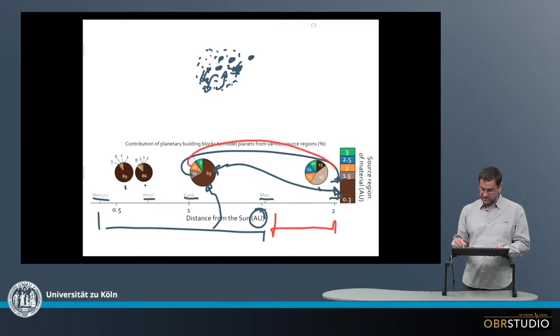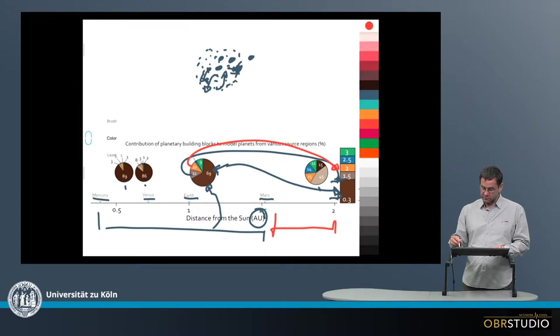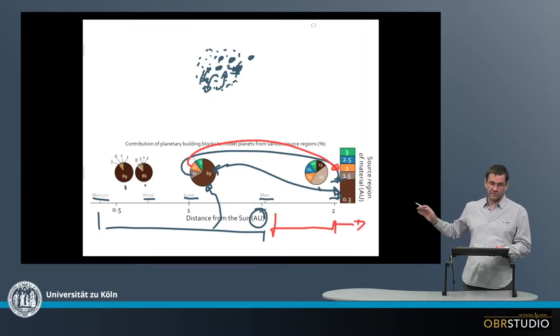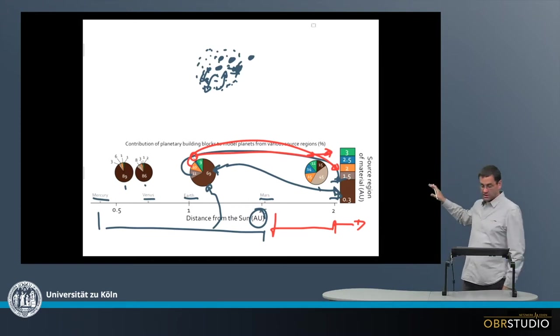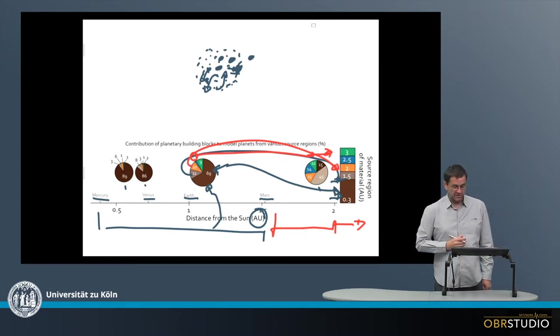Then 10 percent come from 2 to 2.5 astronomical units. And there's still some material that comes from even outside 3 astronomical units. And this is how this plot here is read.